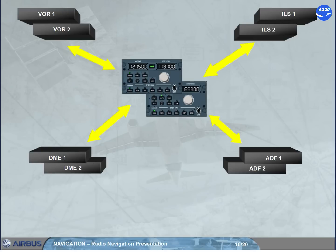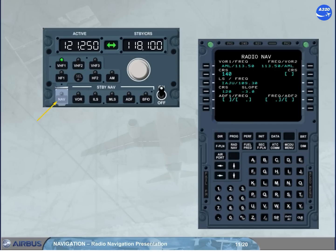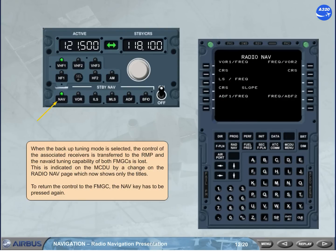The backup tuning mode is accessed via the radio management panel, RMP. Note that RMP3 has no backup tuning capability. To access the backup tuning mode, the navigation key has to be pressed. When the backup tuning mode is selected, control of the associated receivers is transferred to the RMP, and the navaid tuning capability of both FMGCs is lost. This is indicated on the MCDU by a change on the radio navigation page, which now shows only the titles.